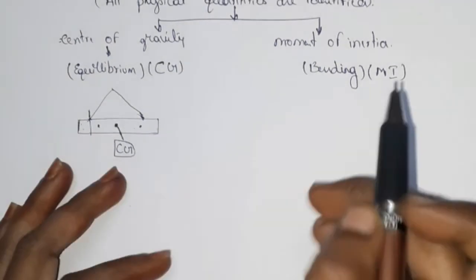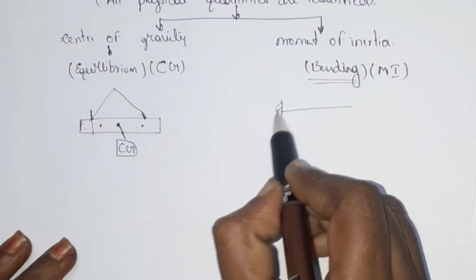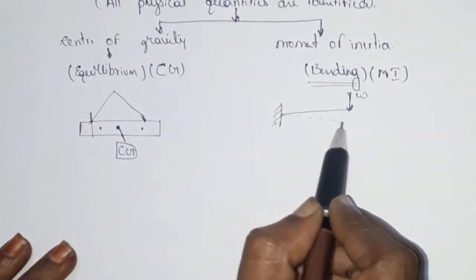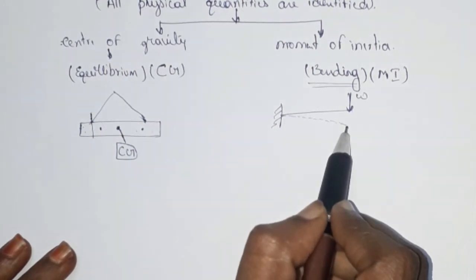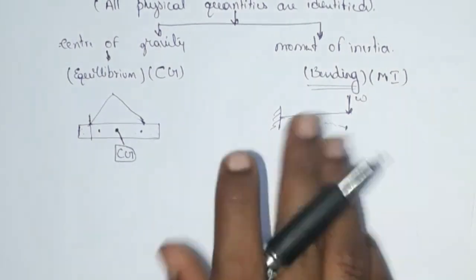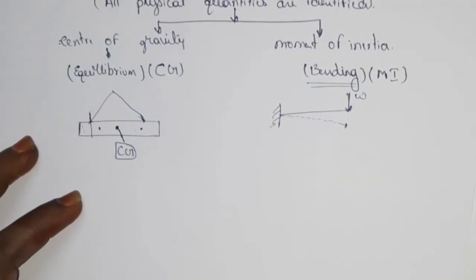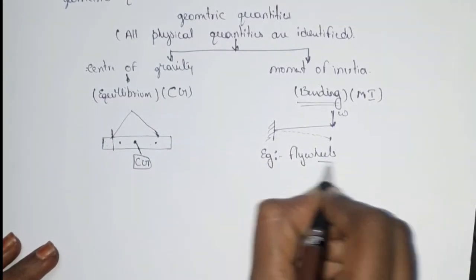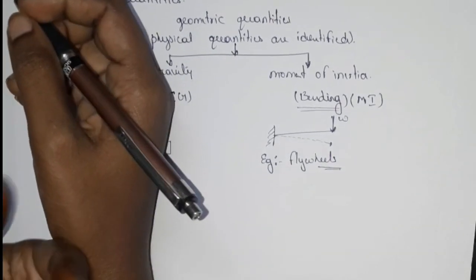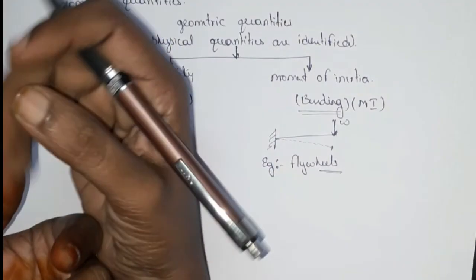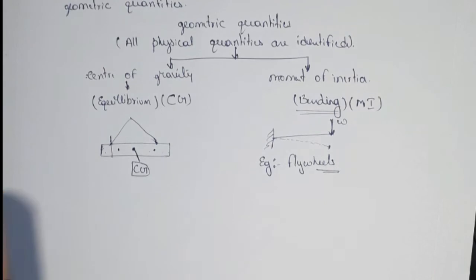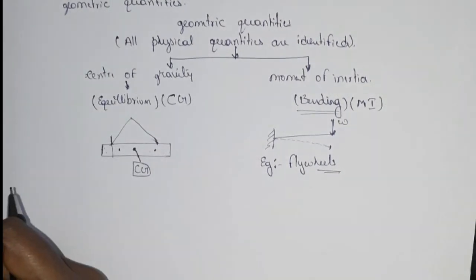The moment of inertia is related to bending. If we take a beam and add a load, the moment of inertia plays a role in this bending — we will cover this in future videos. The best example of moment of inertia is the flywheels, which have a higher moment of inertia. Another example is the rope walk.